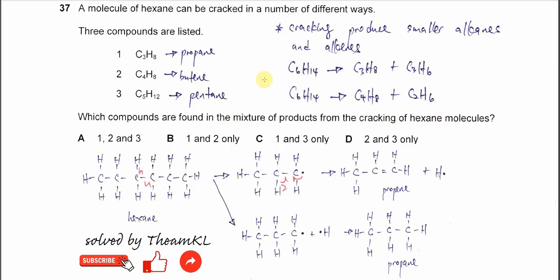The first thing you need to know is that cracking of a larger hydrocarbon, alkanes, will always produce smaller alkanes and alkenes.